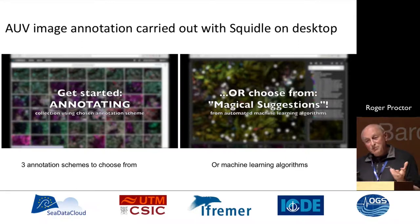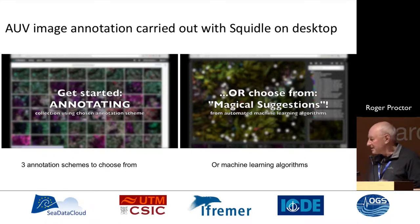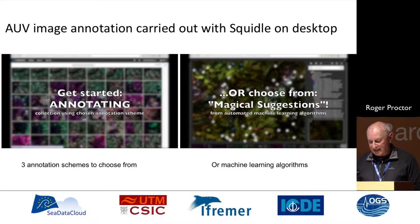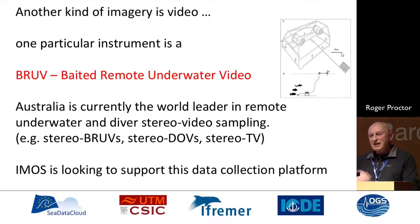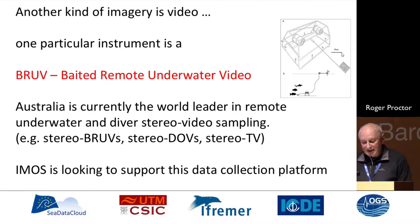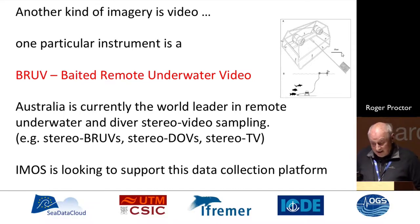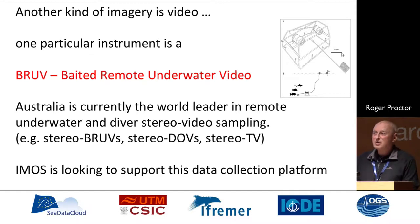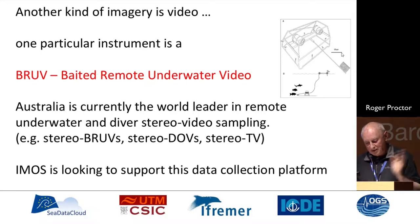Within Squidle we currently have three different annotation schemes because nobody can decide on what the best annotation scheme is. There's also a machine learning tool in there which can take a guess at what's going on in the image space. We also have other kinds of imagery, and in particular one called baited remote underwater video imagery — BRUV — and I'm told we're currently the world leader in using this kind of technology.